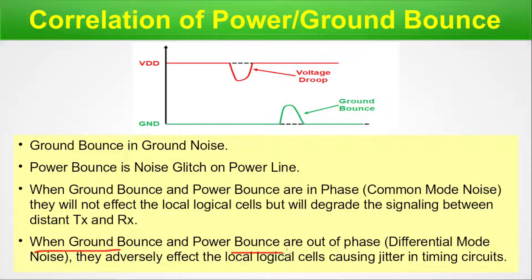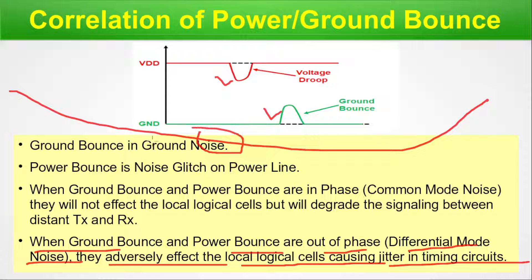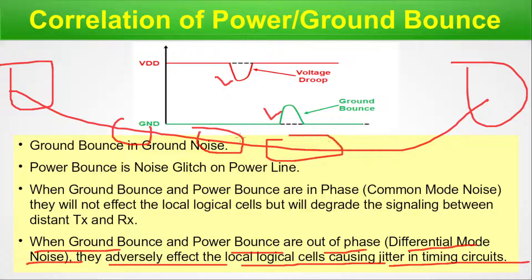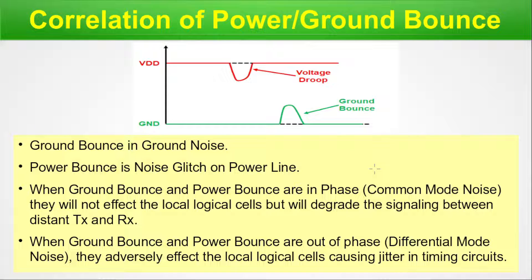When ground bounce and power bounce are out of phase — differential mode noise — they adversely affect local logic cells, causing jitter in timing. The cells along the signal path between TX and RX may all be impacted. When working on your own chip, you can interpret these concepts in context of your specific design.